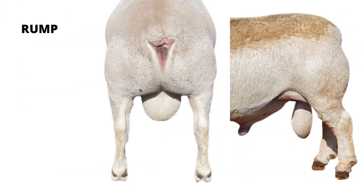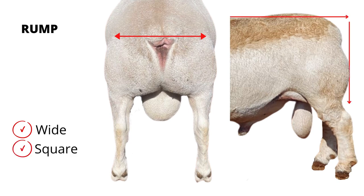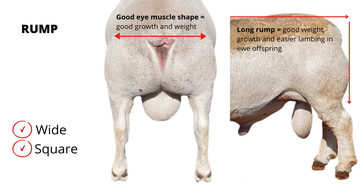Next is the rump. The rump needs to be wide and square. A wide rump is correlated with good eye muscle. The right shape is correlated to good growth and weight. A long rump is directly correlated to good weight and growth, and directly correlated to easier lambing in the ewe offspring. That is proven with measurements and trials.